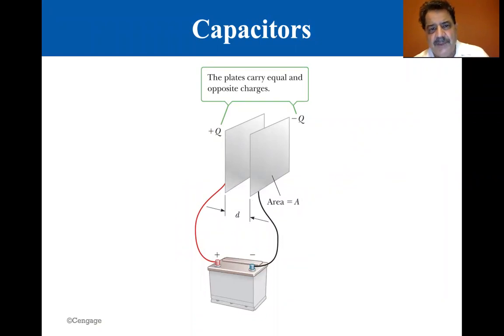This is a typical arrangement for a parallel plate capacitor. The plates carry equal and opposite charges. Once I get to the end of this section, I'll make a little video available to you. So you have these two plates and they're connected to a battery.